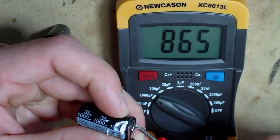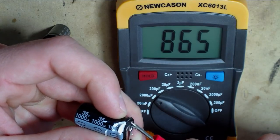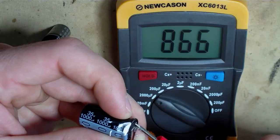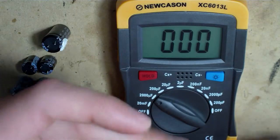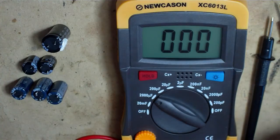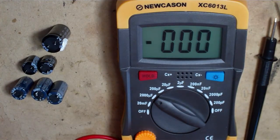Now this one's rated for 1000 and you usually want to go with 10%. So this one obviously is a bad capacitor. 866, 10% of 1000 is 900. So you don't want to go any lower than 900.